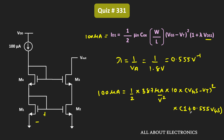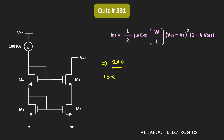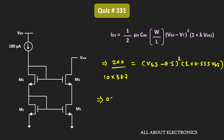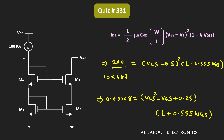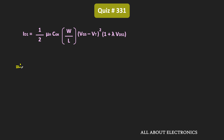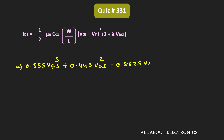Rearranging this expression, substituting the known values of μnCox=387μA/V², W/L=10, and Iref=100μA, we can simplify the equation. After rearranging, we arrive at the cubic equation: 0.555·Vgs³ + 0.455·Vgs² − 0.8625·Vgs + 0.1983 = 0.